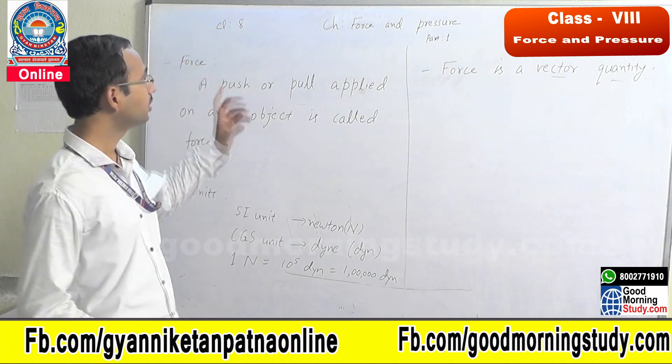Now if the forces act in opposite directions: suppose 5 Newton acts from one side and 3 Newton acts from the opposite direction, then the net force will be equal to 5 Newton minus 3 Newton, which gives 2 Newton. So you have studied how direction is important. If forces act in the same direction, their resultant is the addition of the forces; if forces act in opposite directions, their resultant is the difference of the forces.